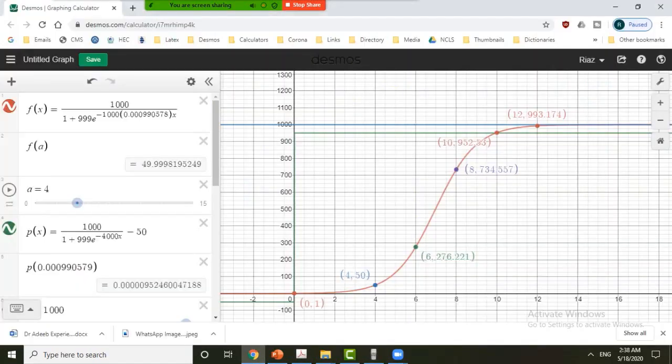Graph by Desmos. The link for this is given in the description below. So if you click on that link you will come right here. Here is the solution. On the red color graph is that of the solution. We can see that when t is equal to 0 there was only one student infected.